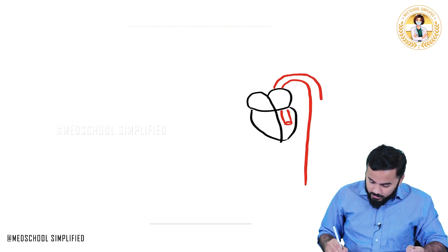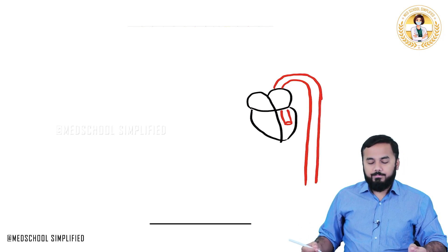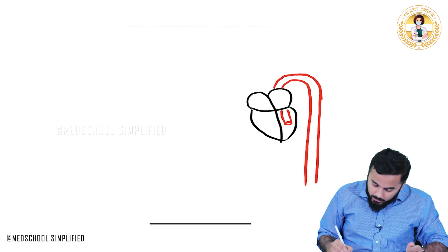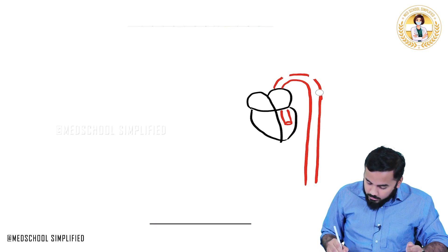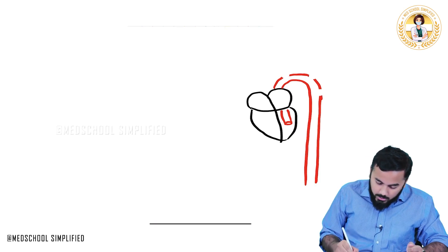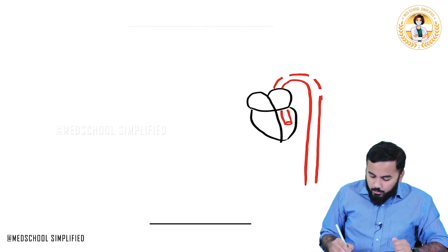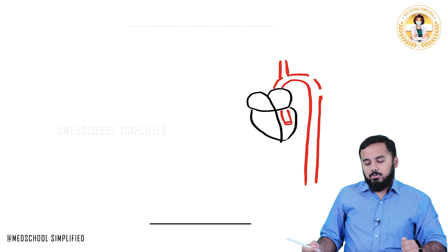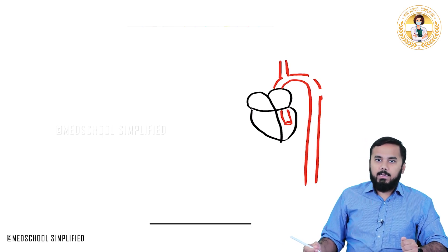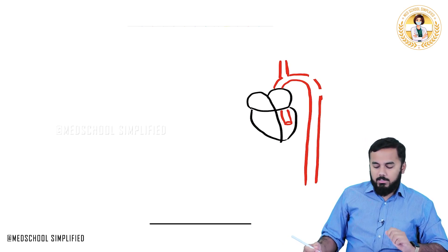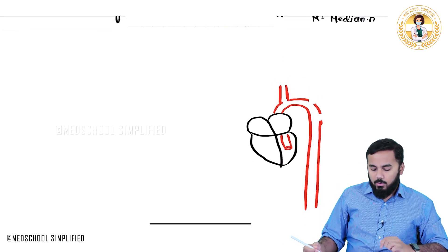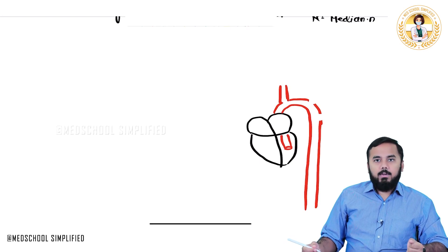This is the arch of the aorta and as it descends it is called the descending aorta. Now here we have a few branches. There is a trunk like this — this is called the brachiocephalic trunk.